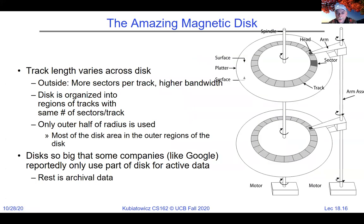These disks are hermetically sealed — you can't open them up. Part of the reason is they spin very fast and the heads fly on a cushion of air just above the disk, floating slightly because of the speed causing a Bernoulli-like effect. Today the bits are so dense and the heads need to be so close that manufacturers have started using helium instead of air — they pump it out and fill with helium. Helium provides less resistance so you can spin faster with less power. Opening the drive will completely break it.